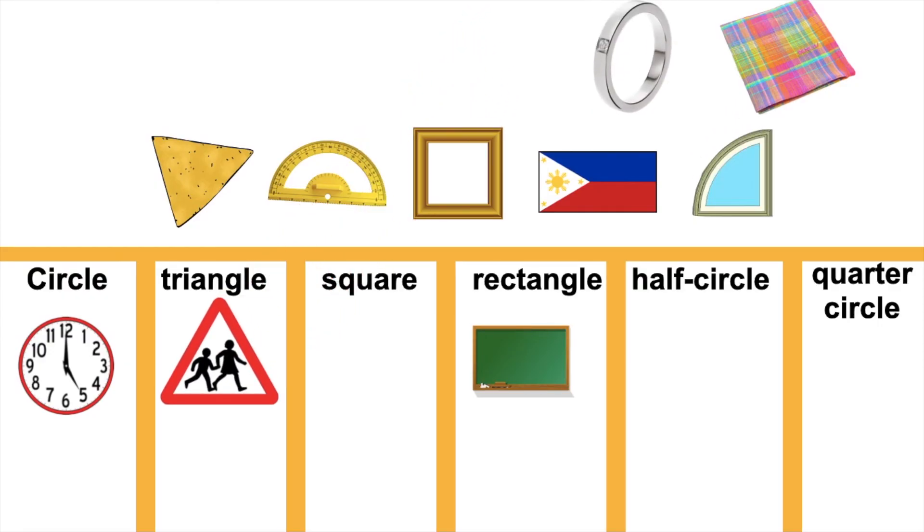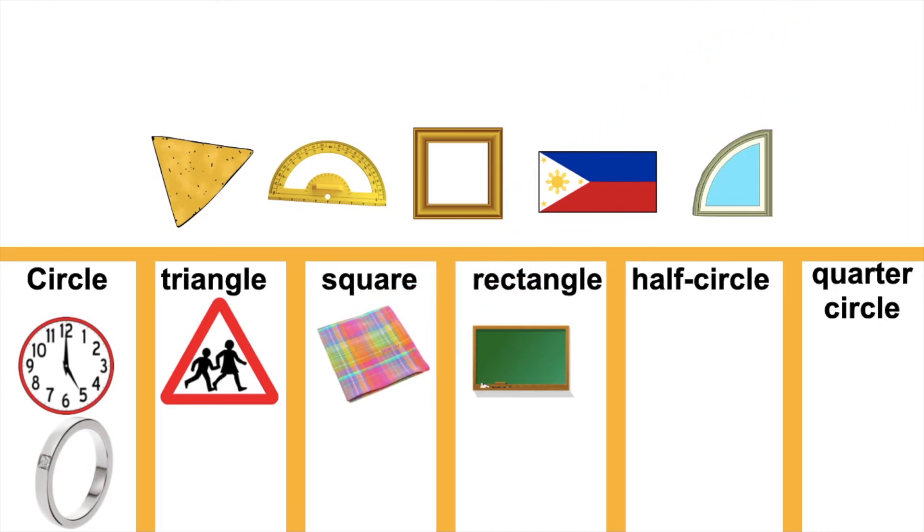How about this ring? Good job, children! It's circle. How about this handkerchief? That is a square. How about this nachos? Good job! It's triangle.